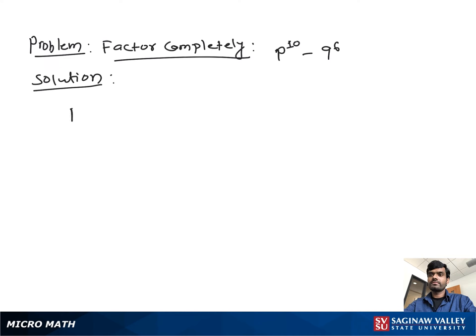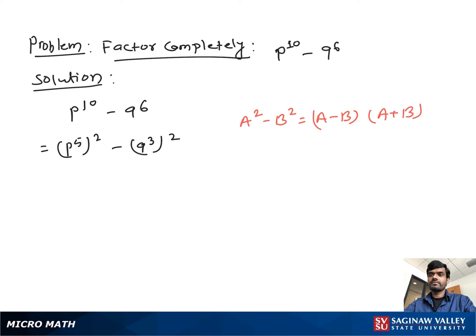Factor completely p to the 10 minus q to the 6. First, we write both terms in square form: p to the 10 as p to the 5, all squared, minus q to the 6 as q to the third, all squared. Now it looks like an a squared minus b squared form, which is equal to a minus b times a plus b.